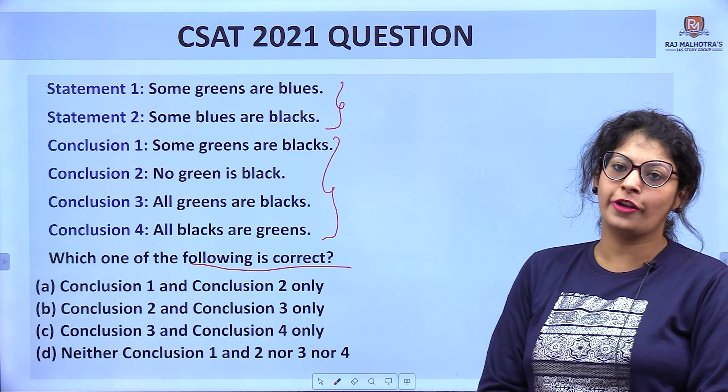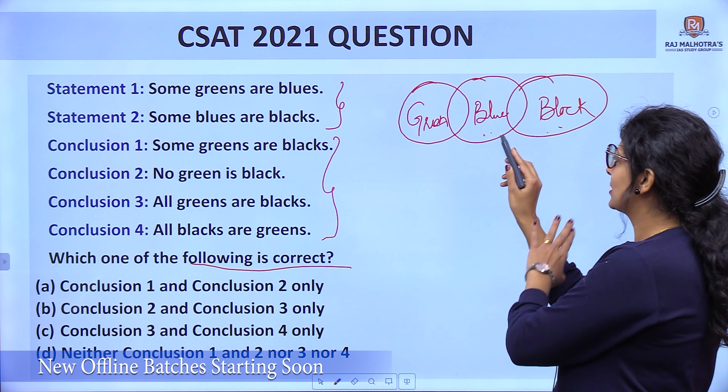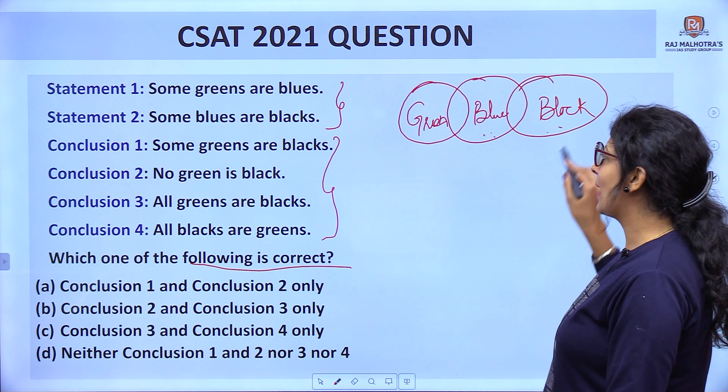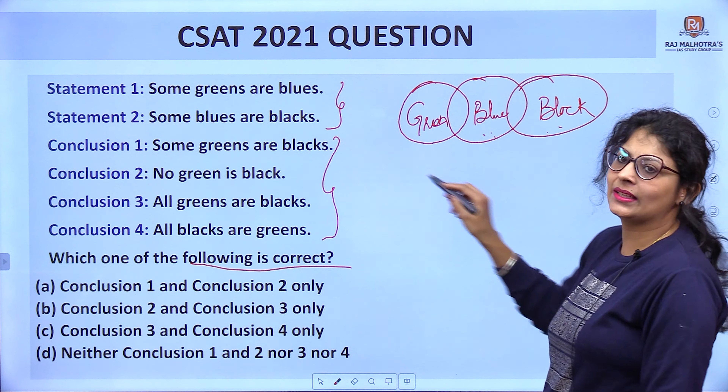If it is the case of surety — agar mujhe diagram mein dikh raha hai, agar wo sahi hai diagram mein — toh that is true. In possibility, each and every conclusion is true, but I need to remember some concepts. In surety, we have no assumption. For example, if I am given 'some classes pass', toh mujhe bas itna hi yaad rakhna hai — some classes pass.